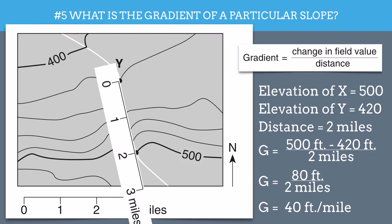So what this means is that if you were to walk down this hill from X to Y, for every mile you traveled, you would be getting 40 feet lower.